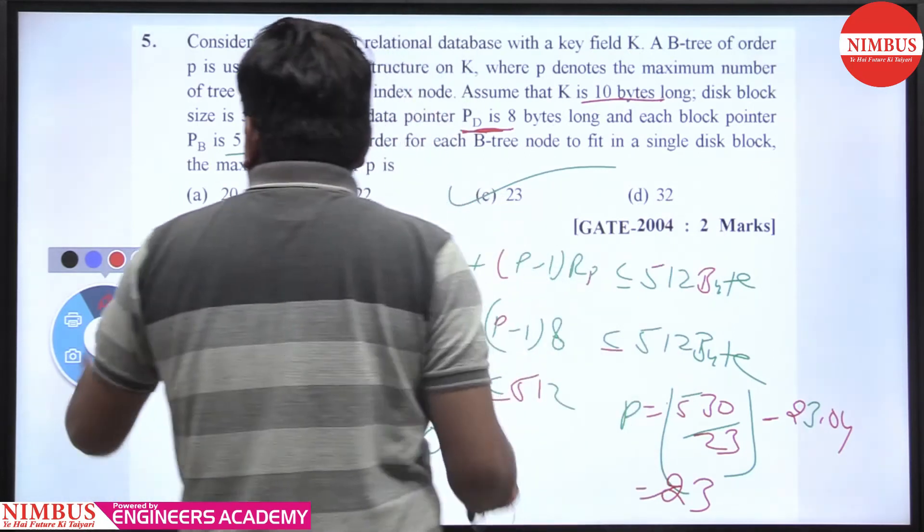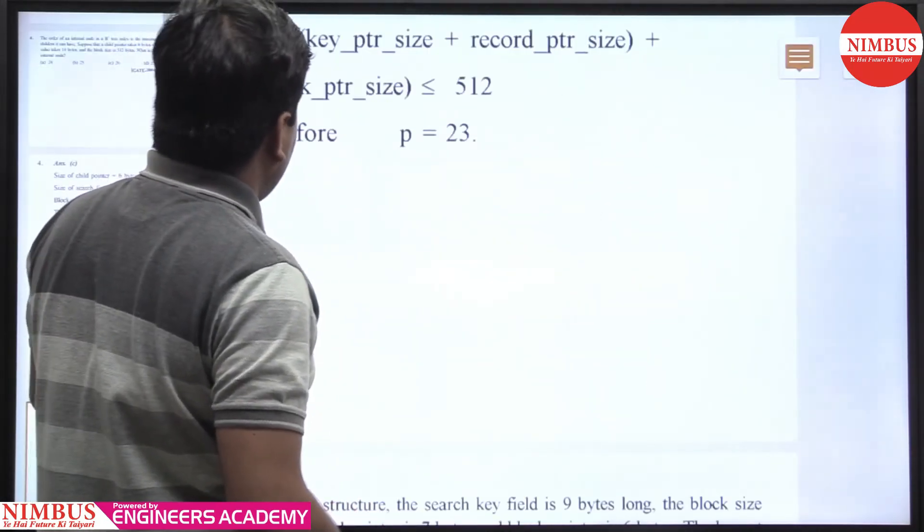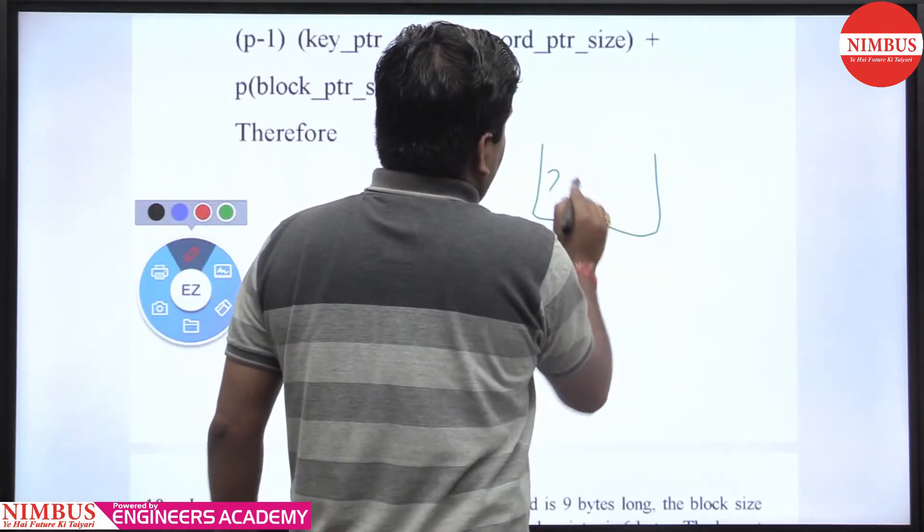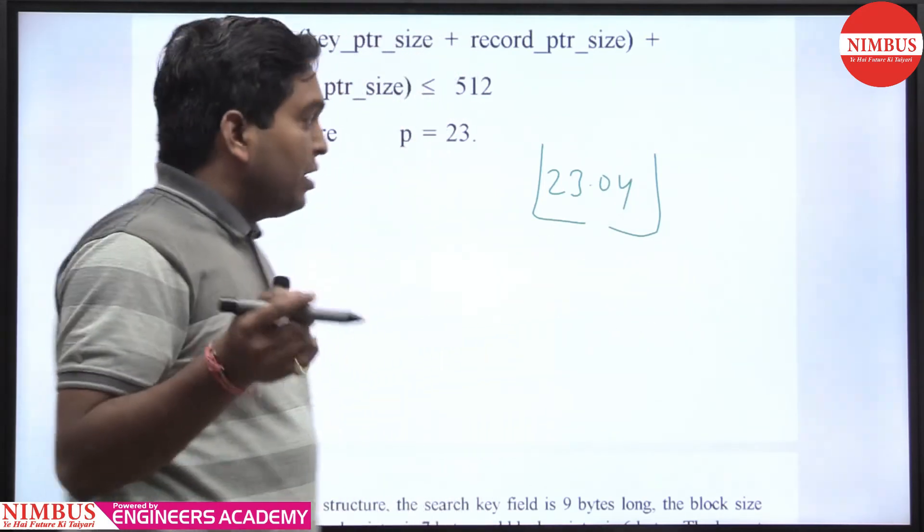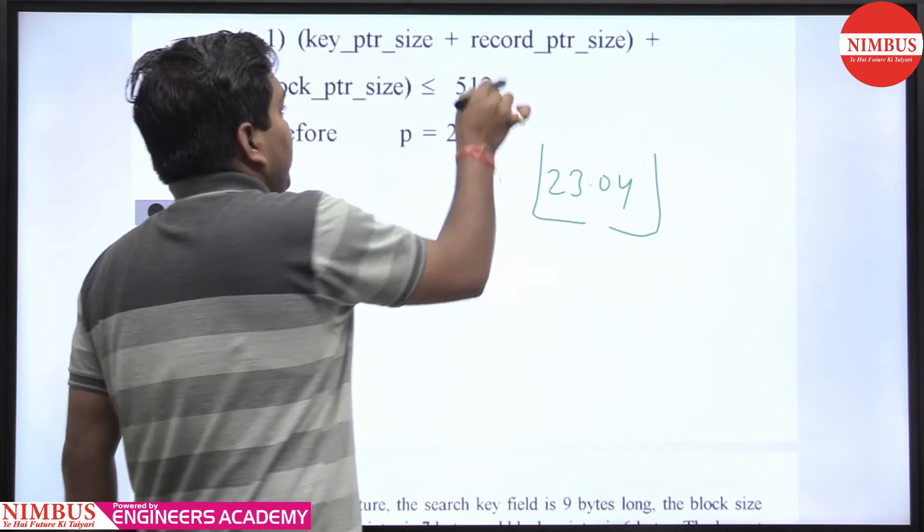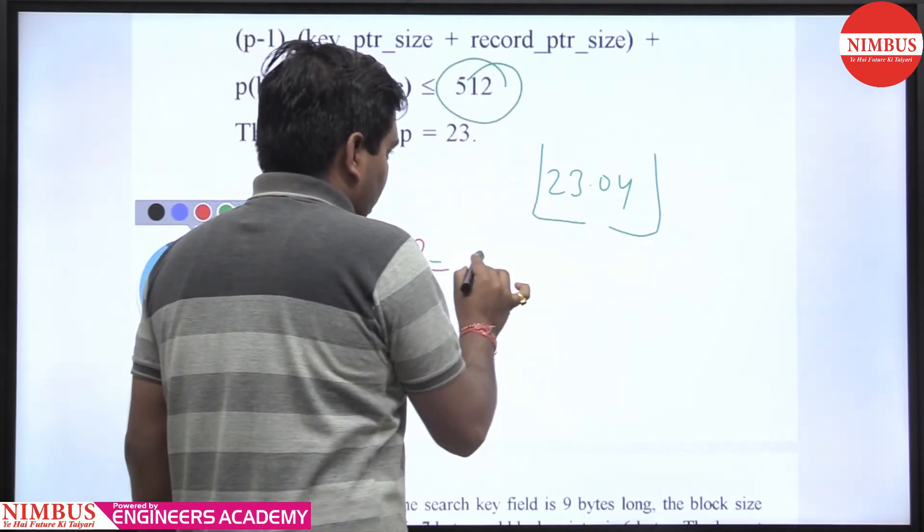So 23 is the right answer. Why we take 23 when we are getting 23.04? Again, the same thing: when we take 24, then all things cannot accommodate in a single block. So we are calculating the order.